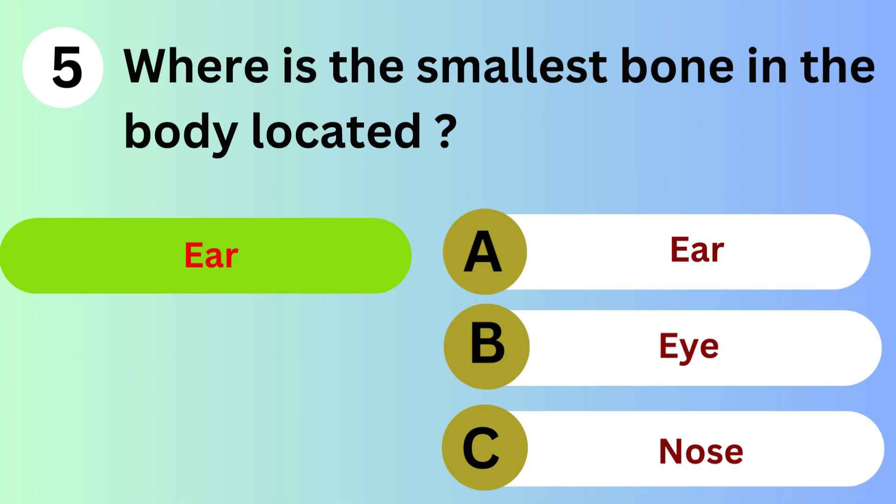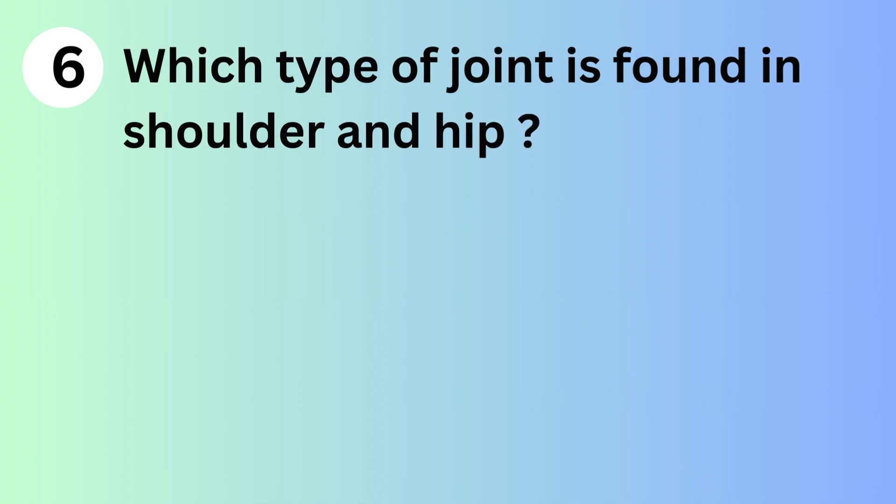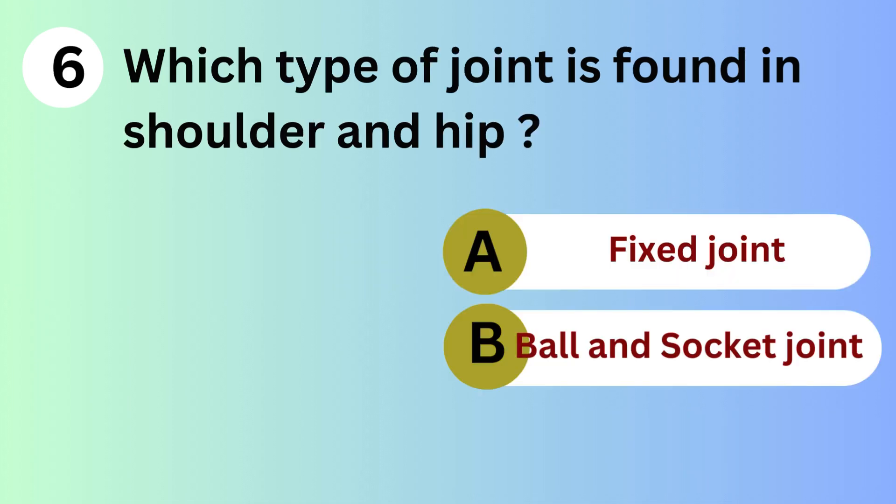Answer is A. Ear. Which type of joint is found in shoulder and hip? A. Fixed joint. B. Ball and socket joint. C. Hinge joint.